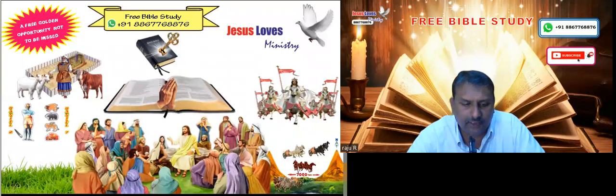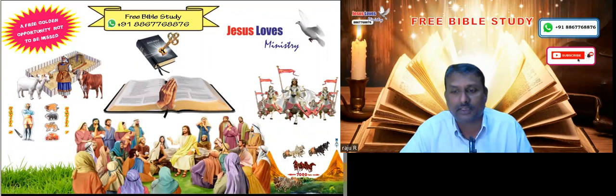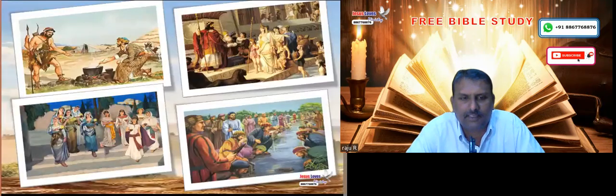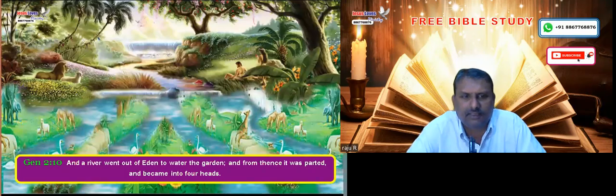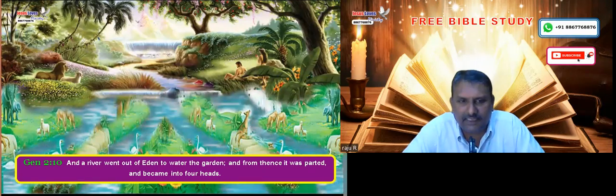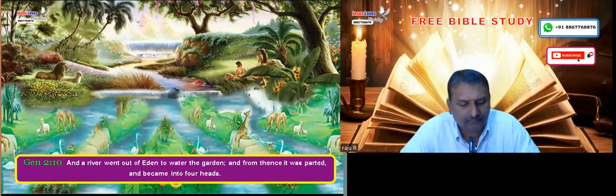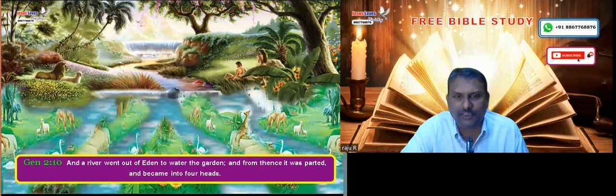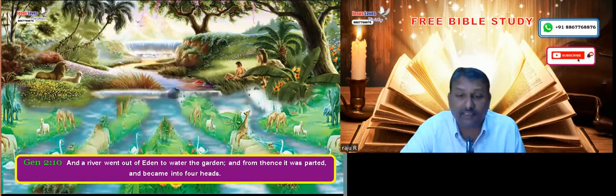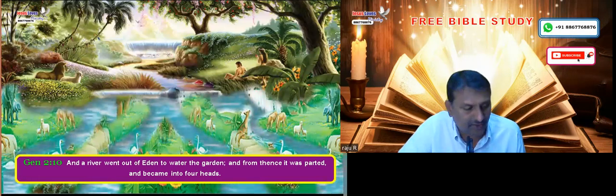Dear brothers in Christ, greetings to you all in the name of our Lord and Saviour Jesus Christ. Today, as we have studied so many classes, we will study one important thing about the book of Genesis. It is mentioned that a river came out of Garden of Eden and was divided into four parts. Let us read Genesis 2:10.